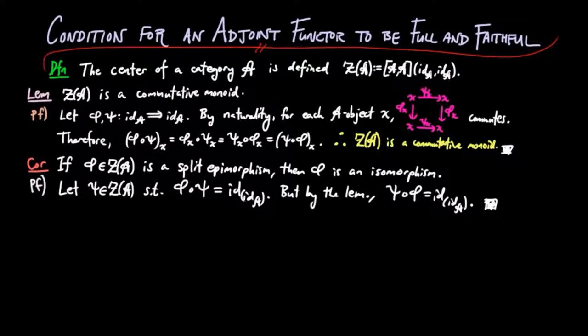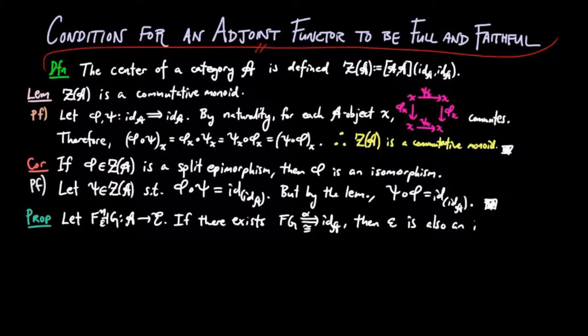Then the main result of this video is the following. Let FG be in adjoint situation. If there exists a natural isomorphism alpha from FG to the identity functor on A, then the co-unit must also be an isomorphism.